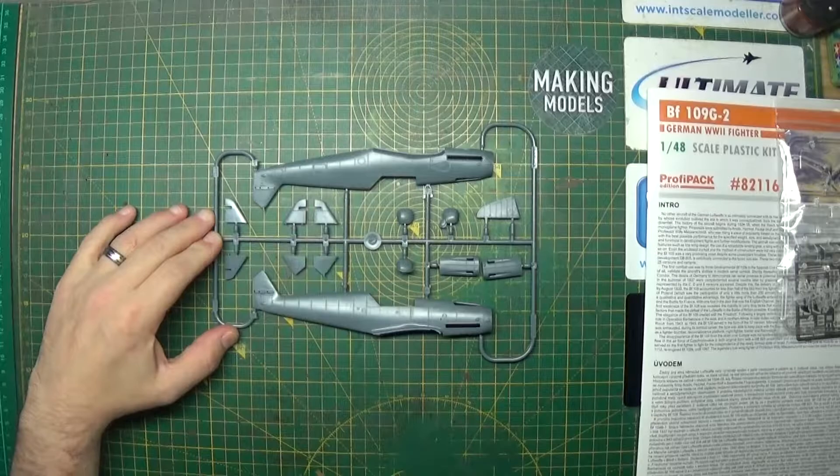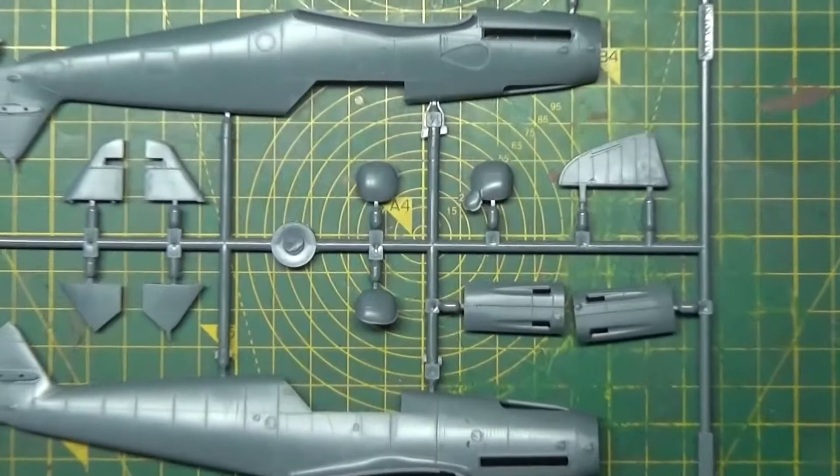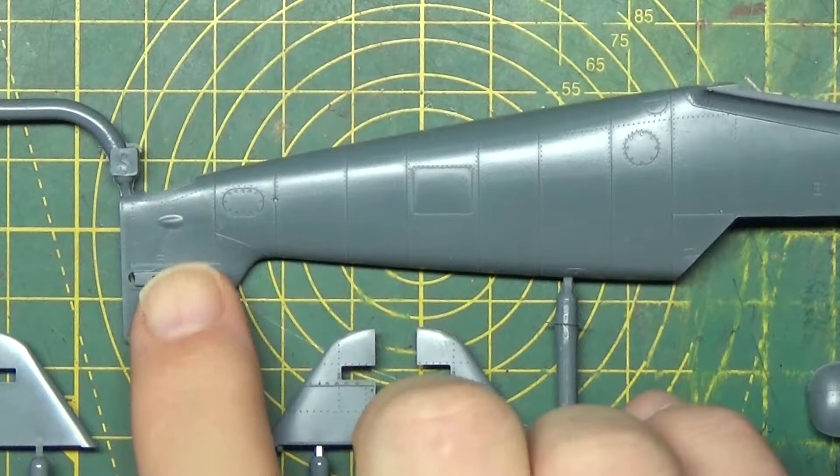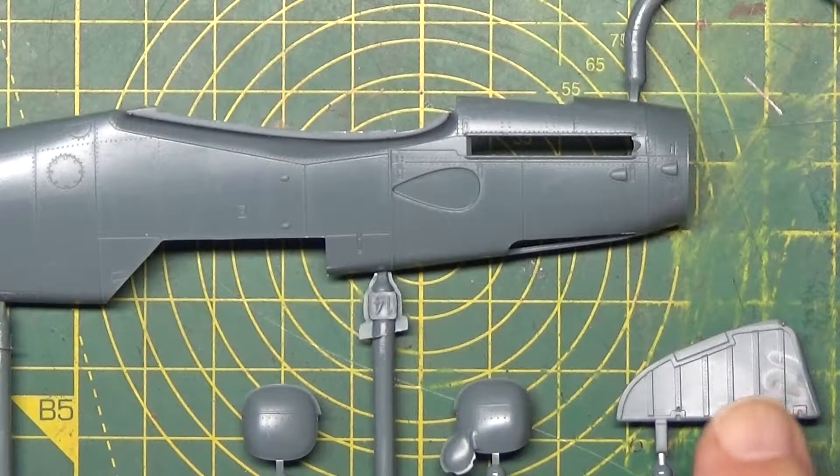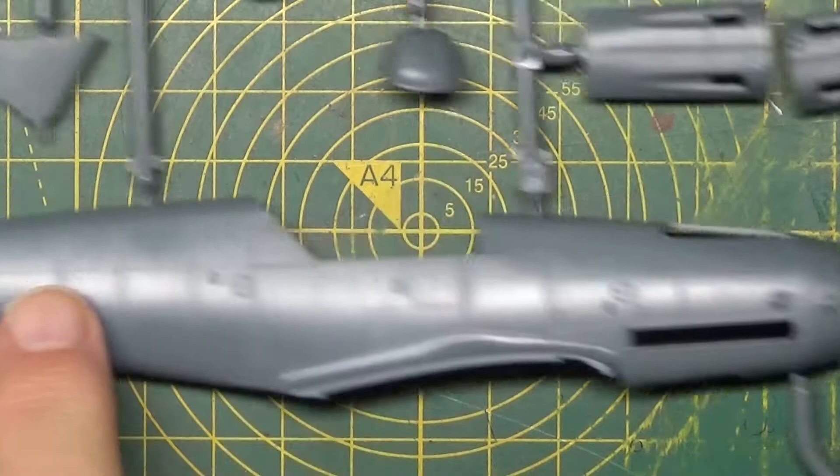And now we've got the main body. Plenty of detail on there. So there we have the main body, got all the rivet detail, this tail piece.